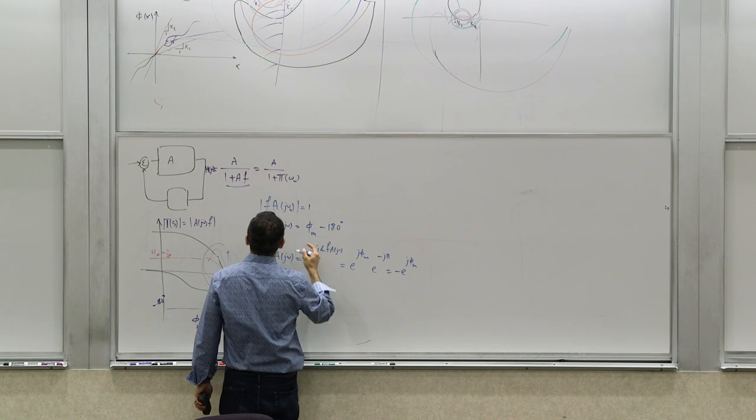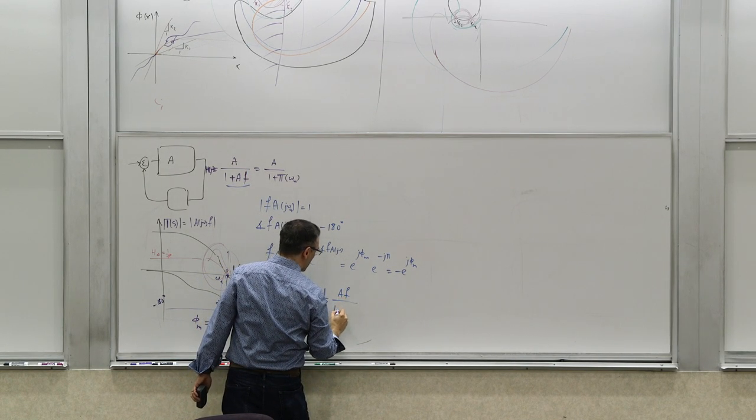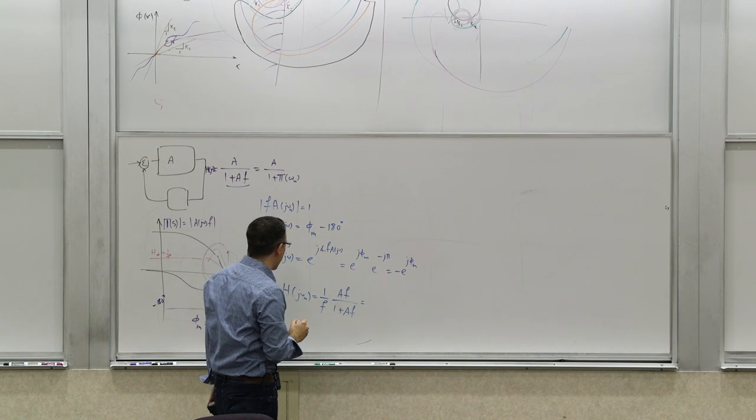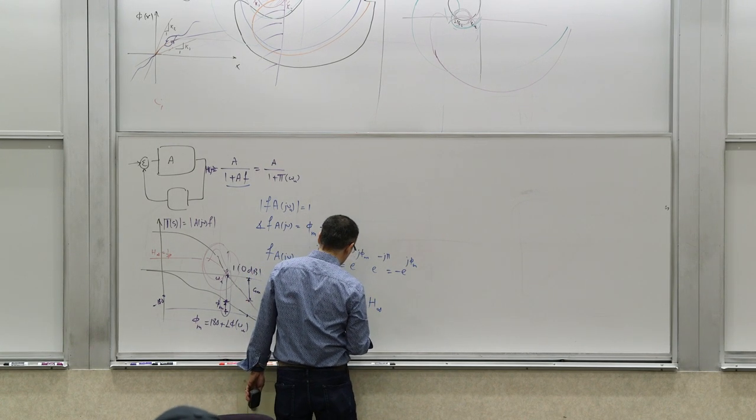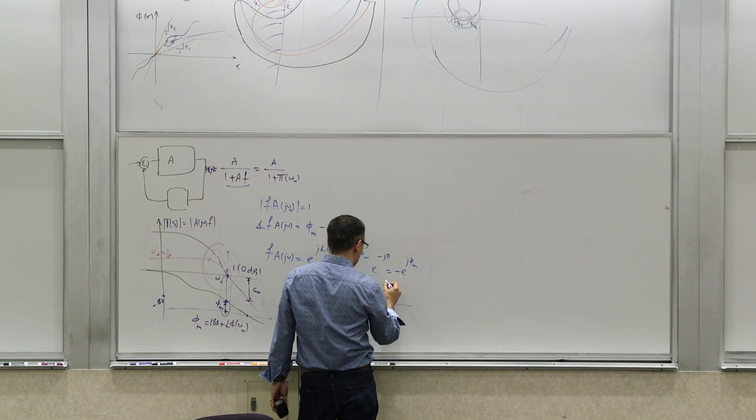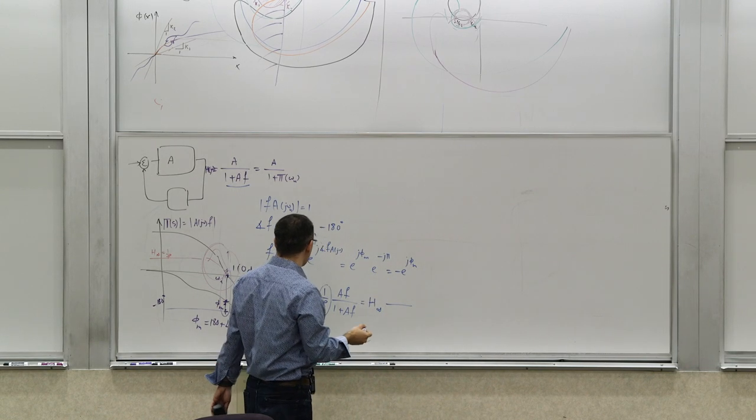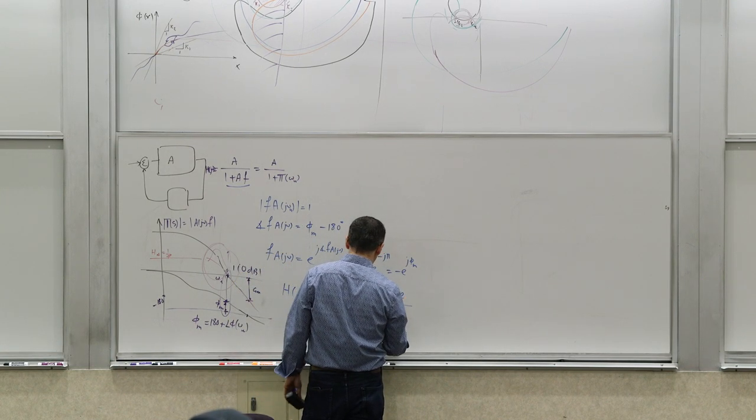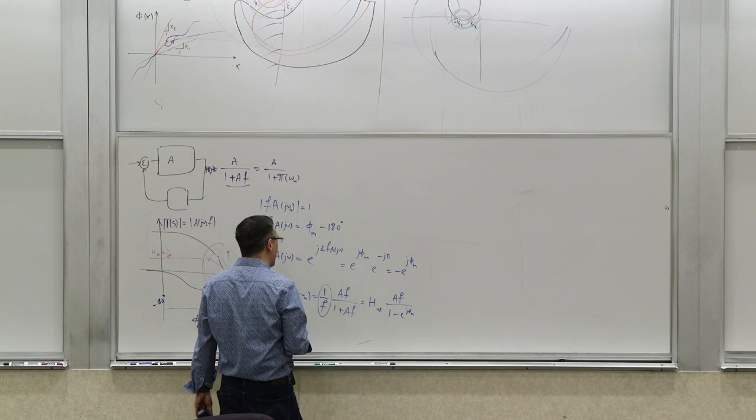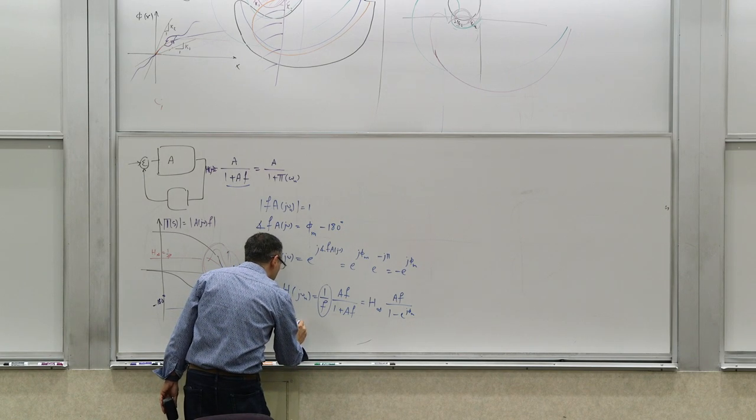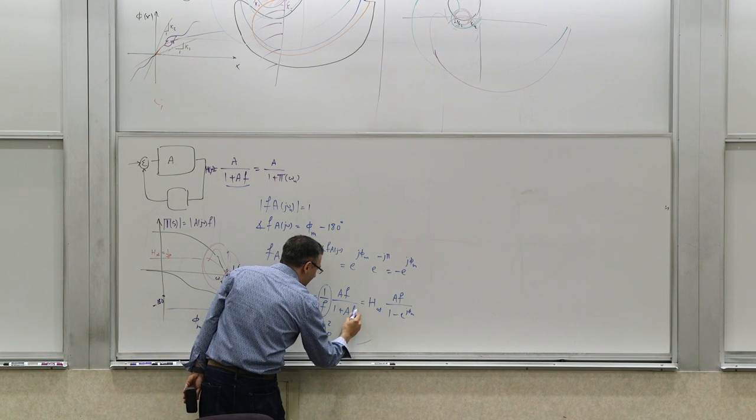So if that's the case, then the transfer function itself at that frequency, so the transfer function at that frequency, it simply can be written in the following form. So now the other thing is that I can multiply and divide by F. So I can write it as A F over 1 plus A F. And at that frequency, and this is H infinity. So you can write it as H infinity, the asymptotic transfer function. And this becomes what? This is this quantity. This is the quantity that you have. You know the magnitude, so okay, let's write it as just A F. And then the denominator is going to be 1 minus E to j phi m.